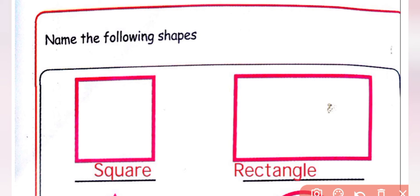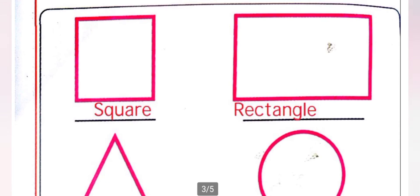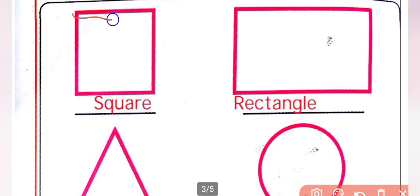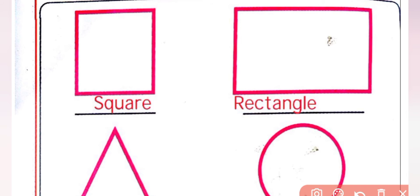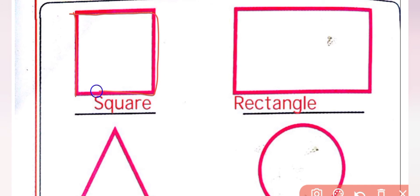Next, name the following shapes. This shape is called square — S-Q-U-A-R-E, square. In the square shape, how many sides are there? 1, 2, 3, 4 — the square has 4 sides. Where two sides join, that point is called a corner. So, in the square, how many corners are there? 1, 2, 3, 4 — the square has 4 corners.